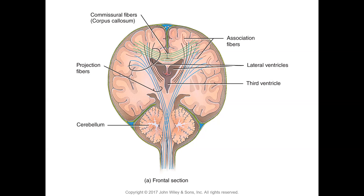There are three regions in the cerebrum: the cerebral cortex, the white matter, and the deep basal nuclei. The cerebral cortex is the superficial gray matter composed of nerve cell bodies and dendrites — this is where sensory information is integrated and motor output is initiated, and where emotion and intellectual processing occur. The basal nuclei are clusters of neuron bodies found deep within each cerebral hemisphere, controlling automatic skeletal muscle movement and involved in the limbic and emotional brain.